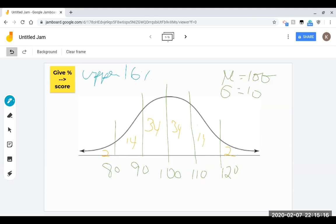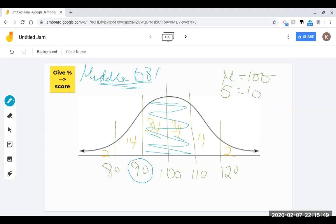All right, let's do one more. What score is associated with, what two scores are associated with the middle, middle 68%? All right, so I want 68%, but it's got to be in the middle. Remember we have 34 and 34, those together are 68. So the middle 68% is associated with scores between 90 and 110. So there's two scores that are needed there.